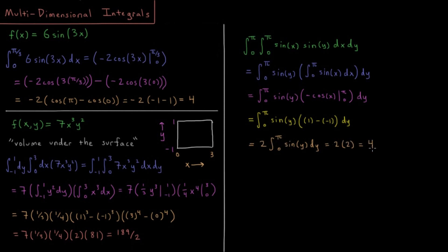We factor that 2 out and integrate sin(y) dy from 0 to π, which also equals 2, giving 2 × 2 = 4. Either approach works — factoring into separate integrals or integrating from inside to outside — and both give the same result: the volume under the surface in however many dimensions your function has.